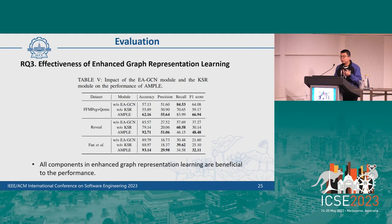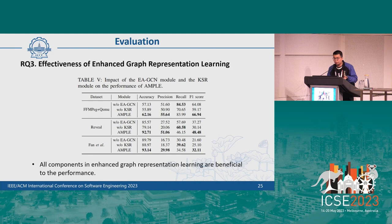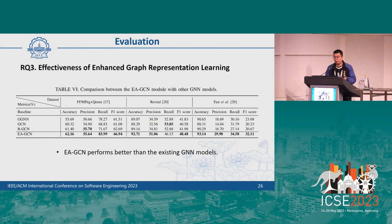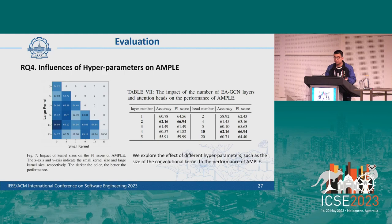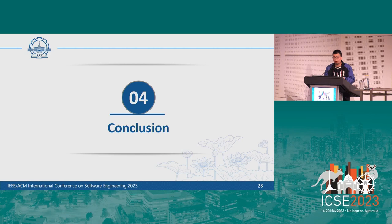In RQ3, all components in enhanced graph representation learning are beneficial to performance. Replacing EA-GCN with existing GNN models such as GCN, GGNN, and R-GCN shows that our proposed EA-GCN performs better than existing GNN models. In RQ4, the influence of hyperparameters on AMPLE is explored, including the size of the convolutional kernel and EA-GCN layers. In conclusion, existing GNN-based vulnerability detection methods tend to fail to capture global information, causing the over-squeezing problem. AMPLE addresses this with graph simplification and enhanced graph representation learning. Source code, datasets, and full experimental results are available at the provided GitHub link.